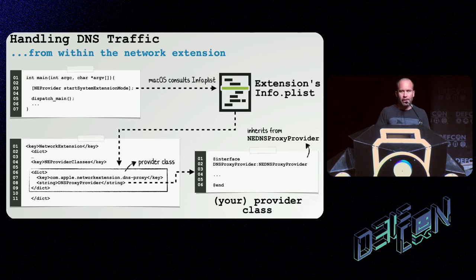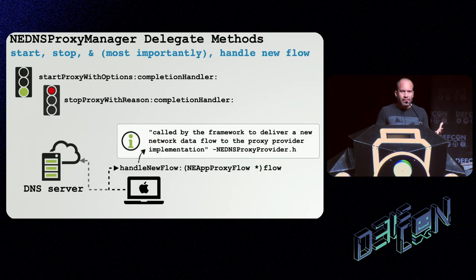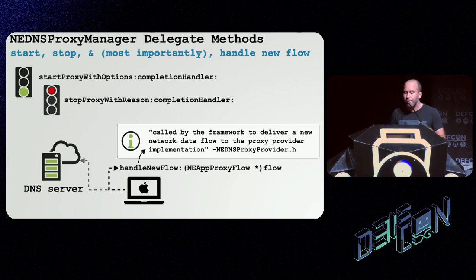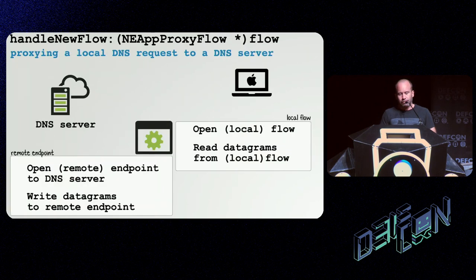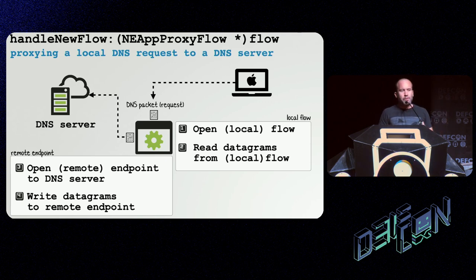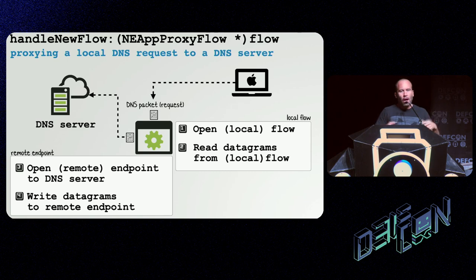Behind the scenes, macOS will consult the info.plist file of the network extension, which you will have to set up to specify what class in your program is going to implement the delegates — for example, to handle new DNS requests. The delegate class has three methods to implement: a start and a stop method to perform any initialization or cleanup, and most importantly the handle_new_flow API method. Apple's documentation says this will be invoked anytime a new DNS flow — essentially a connection — is generated. We are building a DNS monitor but using a proxy class, which means we are responsible for proxying on the data.